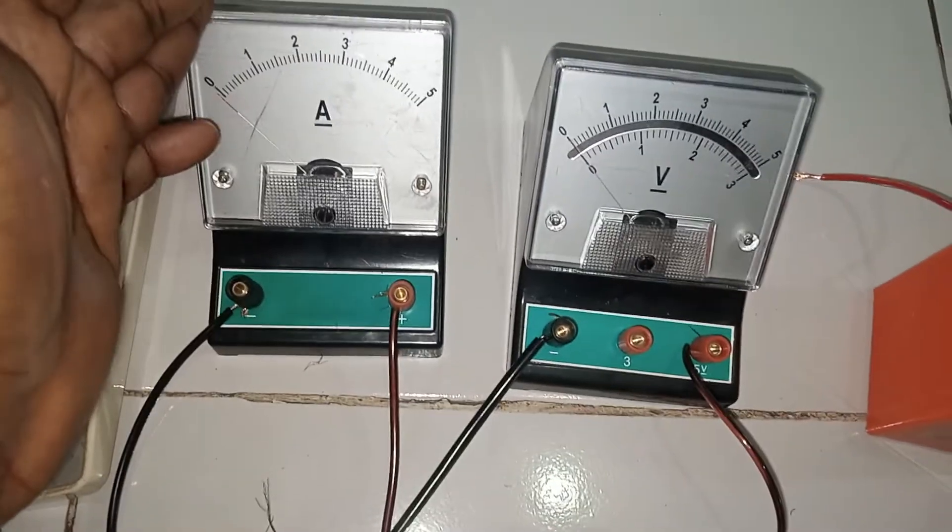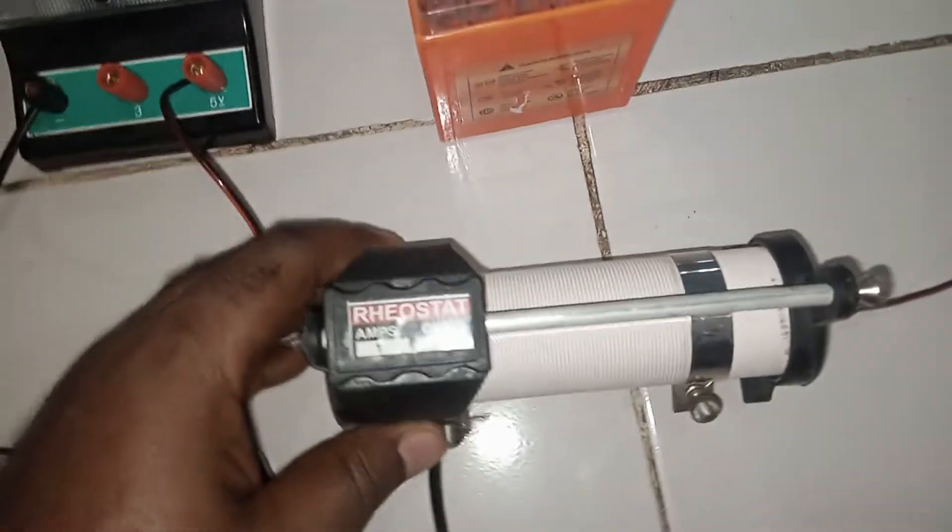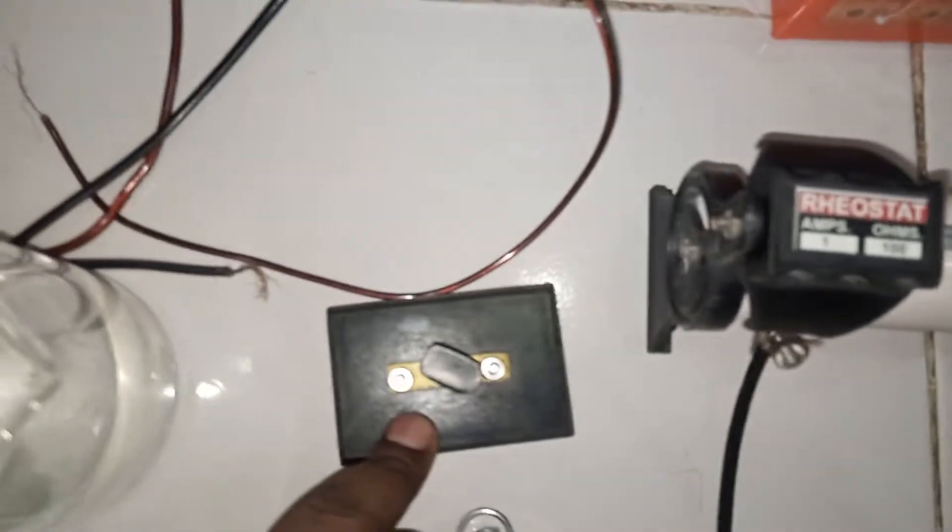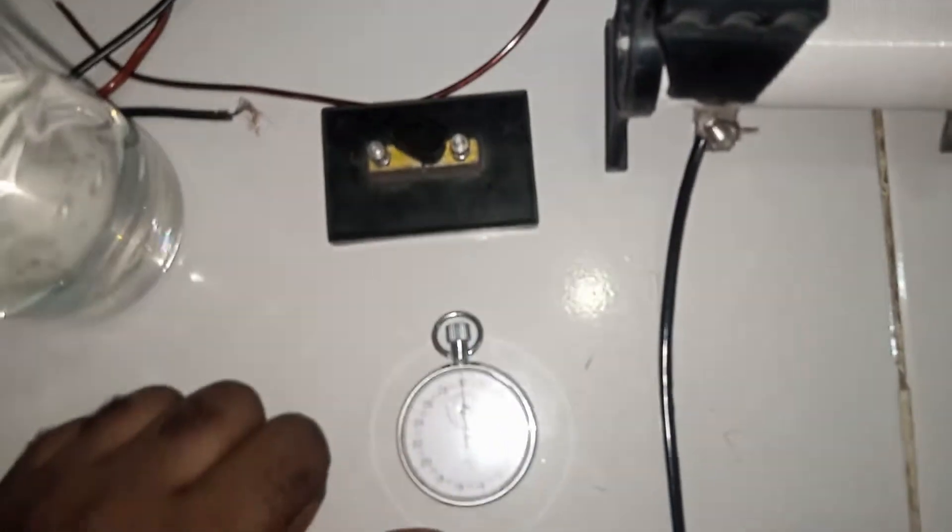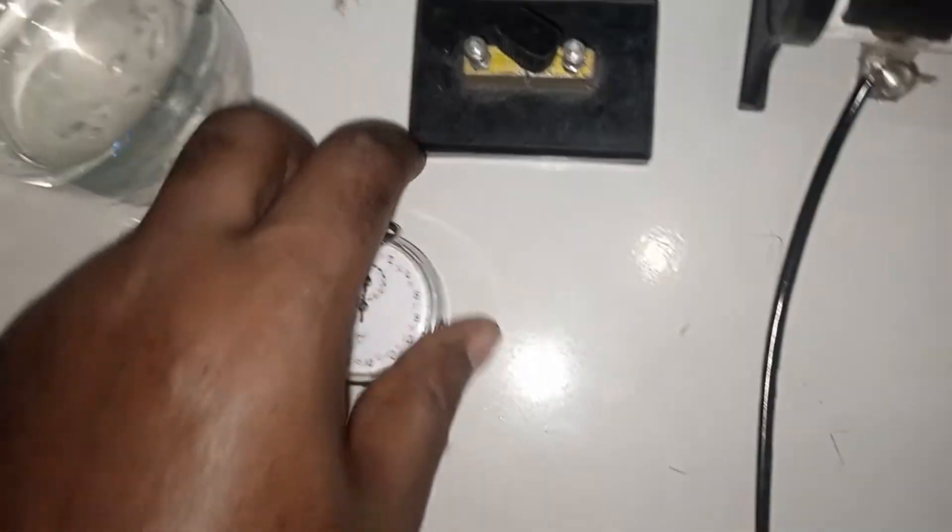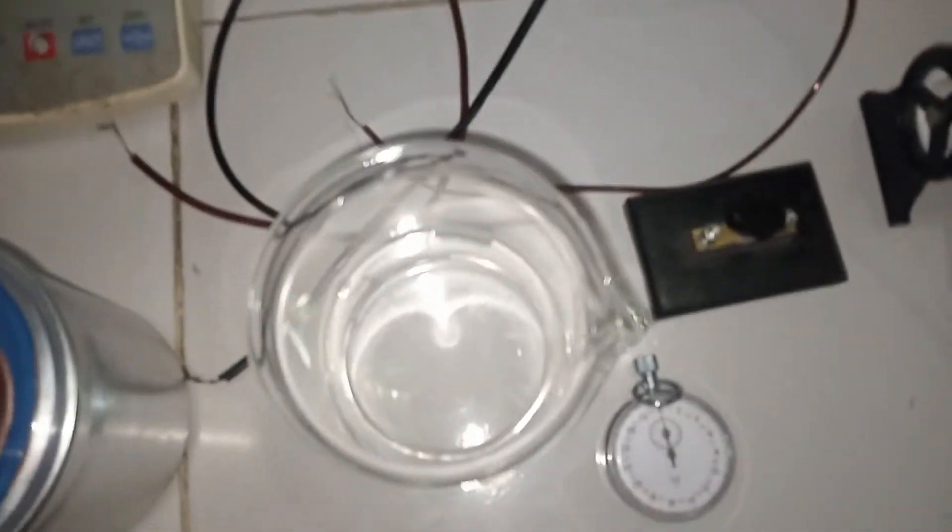We also have the ammeter 0 to 5 amperes, the voltmeter 0 to 5 volts, a 12 volt battery that we're going to use, and then we have a rheostat. The essence of the rheostat is to help us maintain a steady current throughout the experiment, and then the key to cut off current where it is necessary. Then finally we need a stopwatch to measure the time during which the current is passed on the heater. Of course this is the water for which we want to find its specific heat capacity.